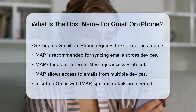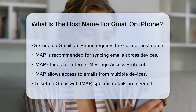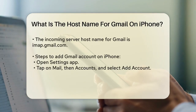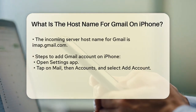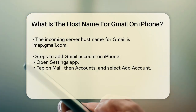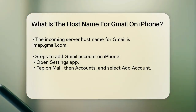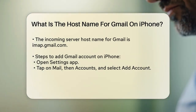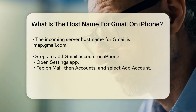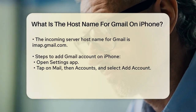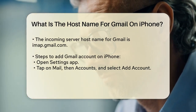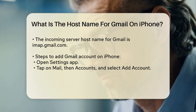To set up your Gmail account using IMAP on your iPhone, you'll need to enter some specific details. Here's where the host name comes in. When you add your Gmail account to your iPhone, you'll be asked for the incoming server host name. For Gmail, this is always imap.gmail.com.